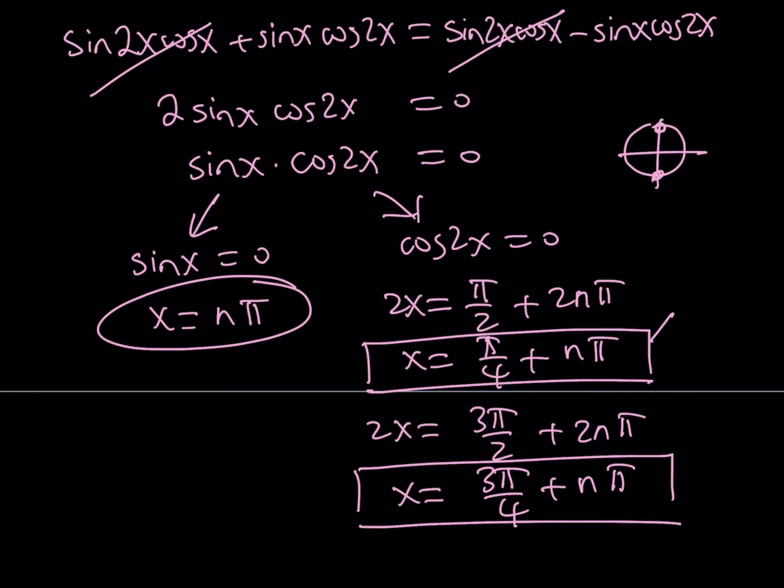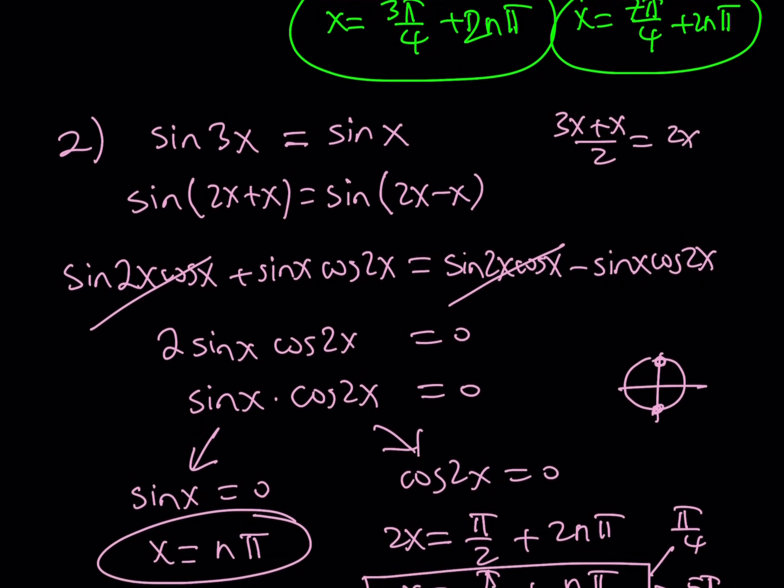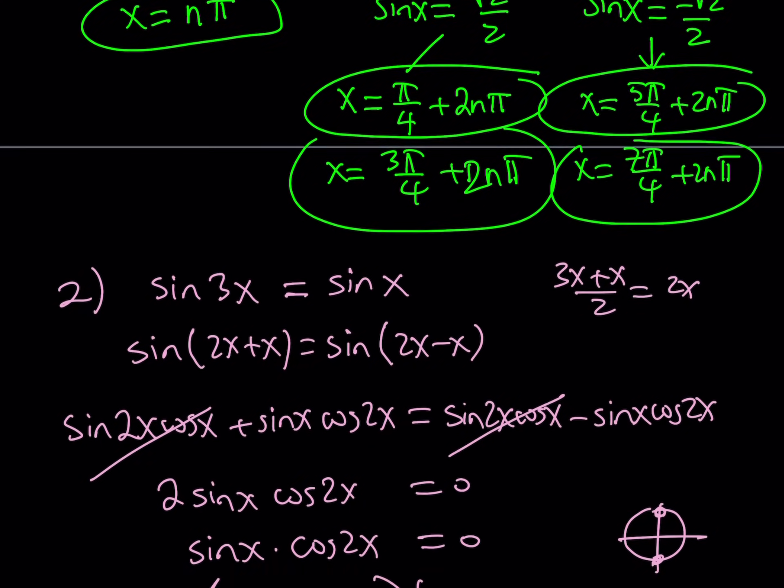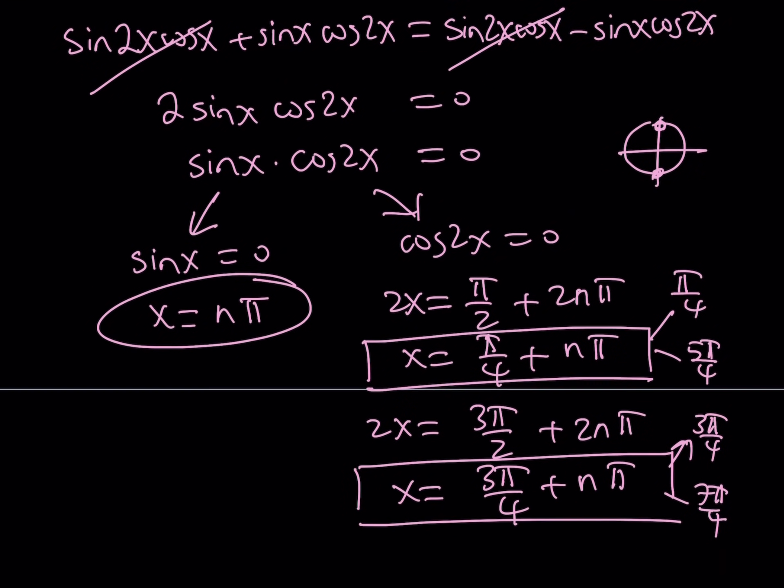So, from here, for example, I can get pi over 4 and 5 pi over 4, right? And, from here, I get 3 pi over 4 and 7 pi over 4. Just like before, remember, we were finding four different solutions with the 2n pi, and it pretty much the same thing happens here.